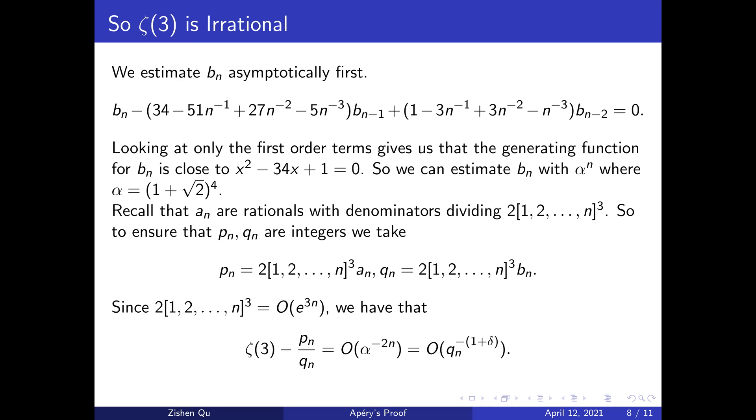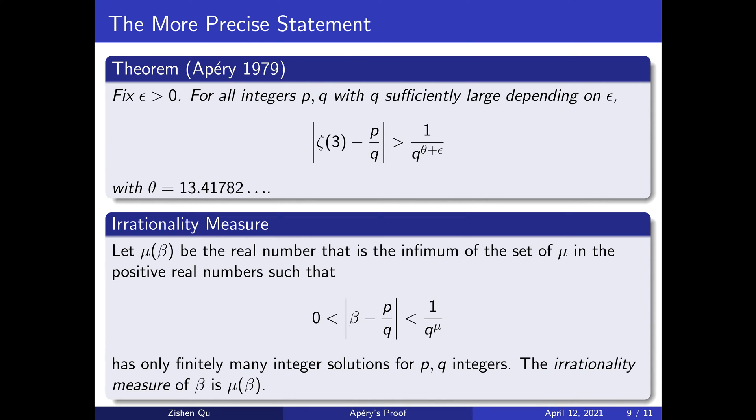So we were able to show that ζ(3) is irrational, but what about the more precise statement by Apéry? Here is the theorem from before. The statement seems different from what we have been working towards, as it tells us that aside from finitely many rationals, the rational approximations of ζ(3) can only be so good.